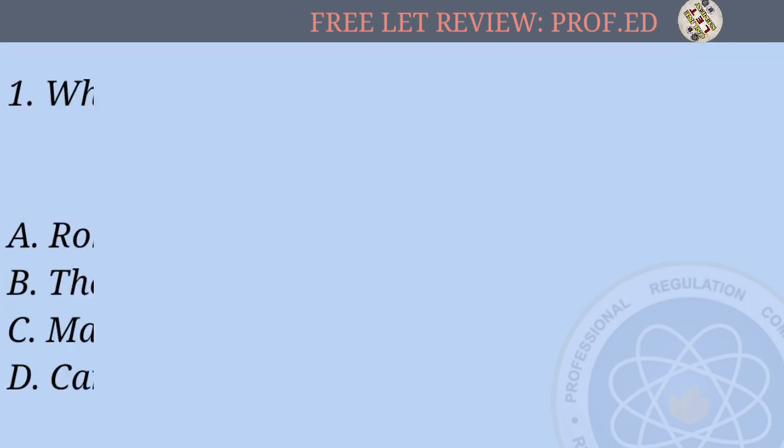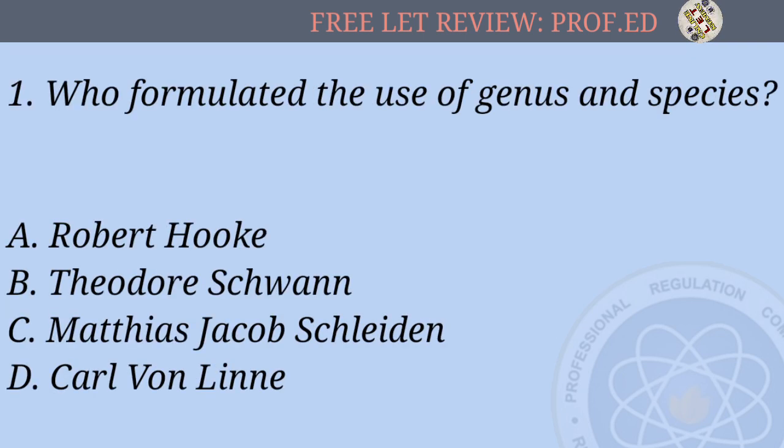Question 1: Who formulated the use of genus and species? A) Robert Hooke, B) Theodore Schwann, C) Matthias Jacob Schleiden, D) Carl von Linnaeus.